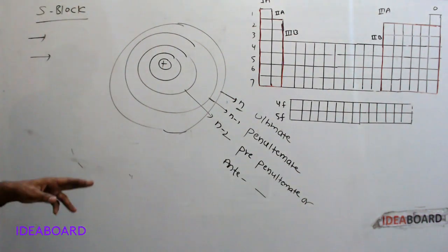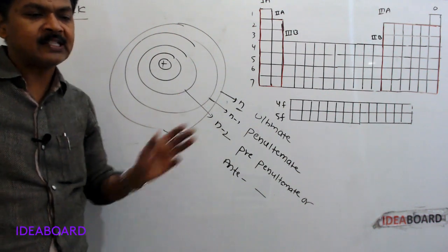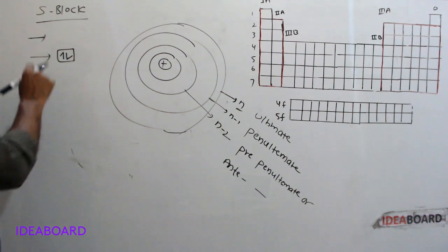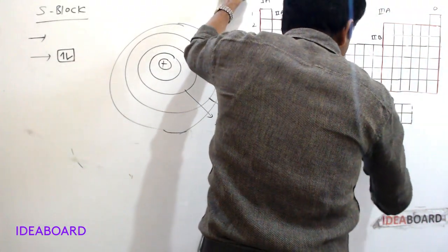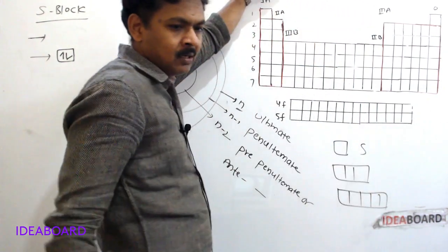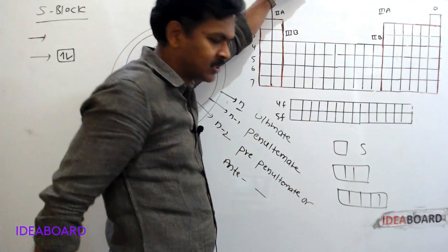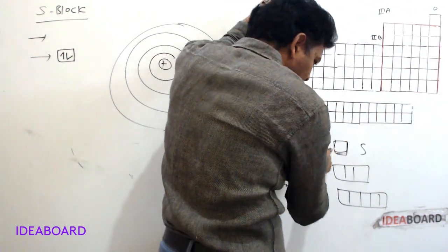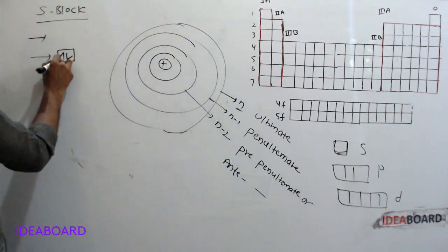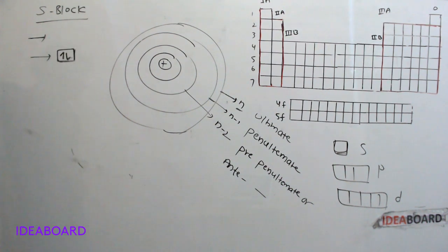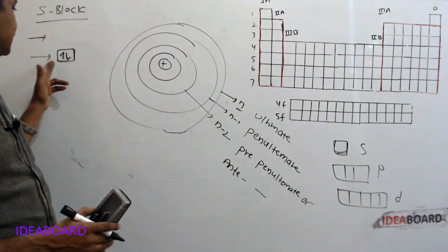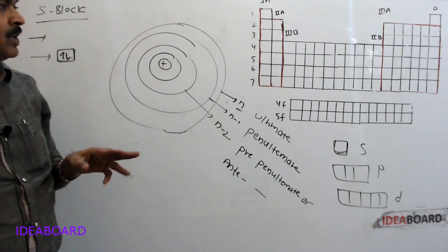In the case of S block elements, the differentiating electron enters into the S orbitals of the valence orbit. The S subshell can accommodate 2 electrons, as it contains only one orbital. That is why S block contains only two groups in the periodic table.